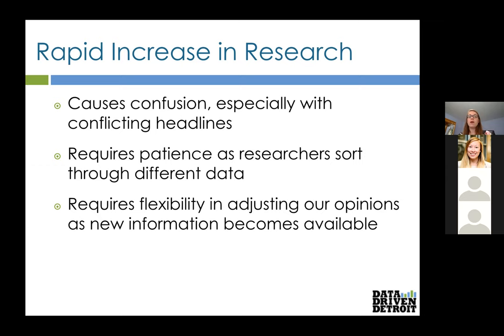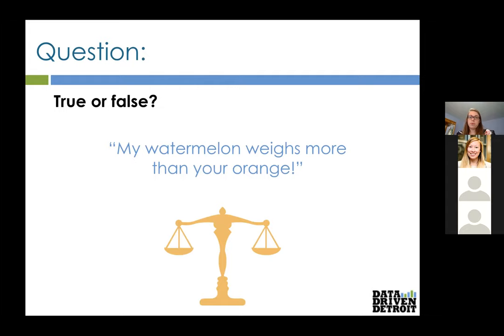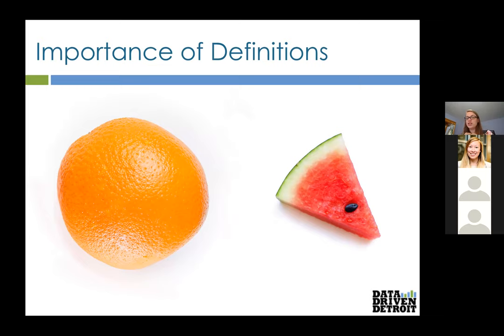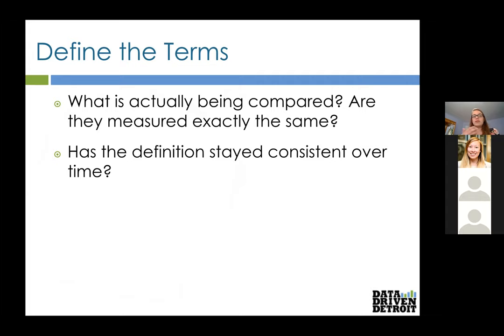The first tip is define the terms. Consider this: true or false — my watermelon weighs more than your orange. If you used a typical definition of a watermelon and an orange you'd say false, but you'd be wrong because I'm comparing a small piece of a watermelon to a whole orange. So obviously in this case the orange weighs more, but you wouldn't know that without asking what definitions were being used.